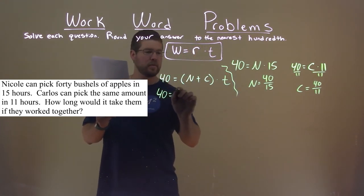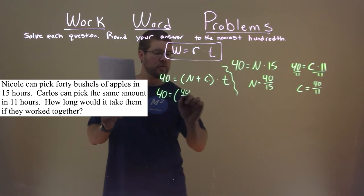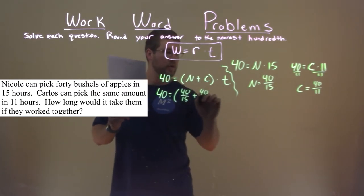So 40 equals n, which is 40 over 15, plus c, which is 40 over 11, Carlos's work rate, times time.